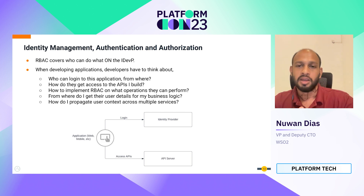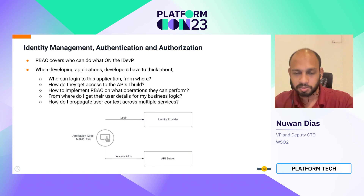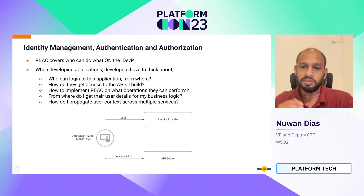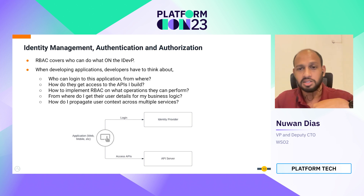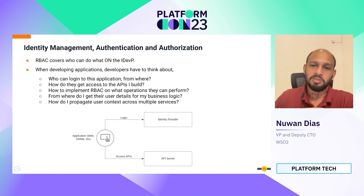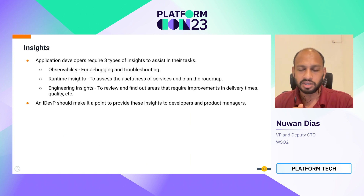Another complicated area developers have to deal with is identity management, authentication, and authorization. For typical web applications, authentication might seem simple — you connect to an identity provider, log in, and get an access token. But the devil is in the details. Developers have to deal with role-based access control on API operations, propagating user context from the client all the way to business logic so the code can read who the user is and what their roles and permissions are. An IDP understands this entire flow end-to-end and can offer a default, built-in solution.